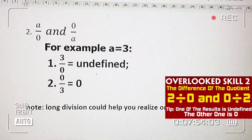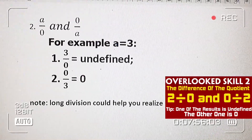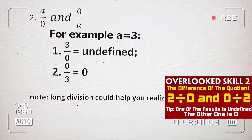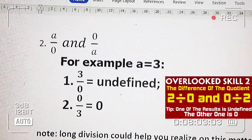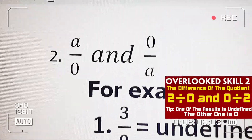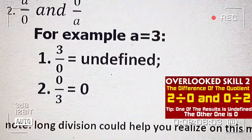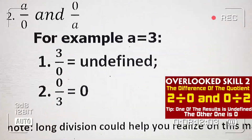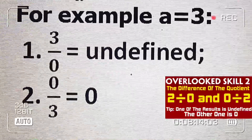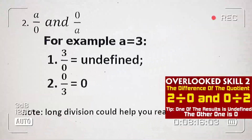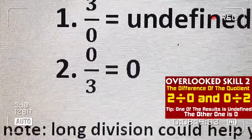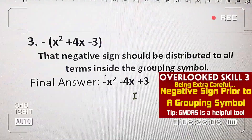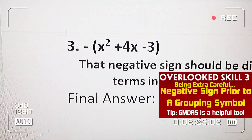Now let's proceed to item 2. So what if A is equal to 3? We are trying to see the difference between the two expressions. So kung si denominator is 0, talaga undefined yan — as stated in my other vlog. Kung nasa numerator naman ang 0, okay lang kasi 0 ang result.